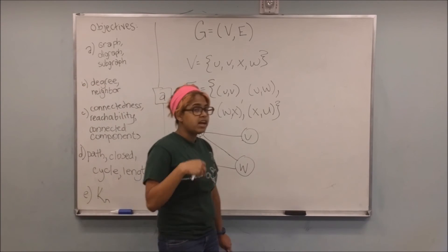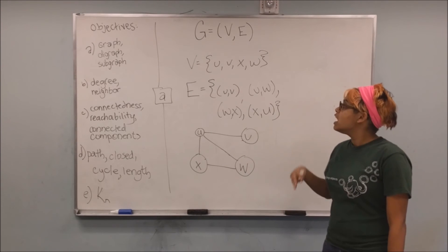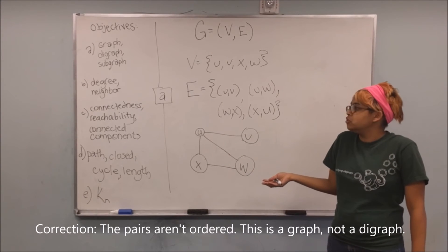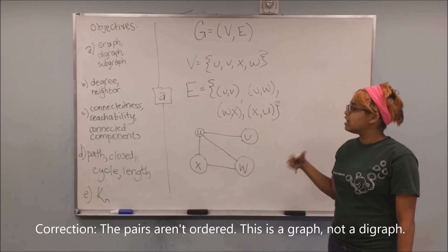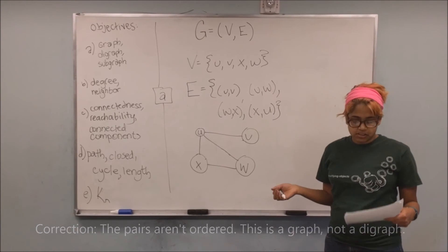Alright, and so this visually represents the graph. So mathematically, it's just defined as the set of vertices, V, and then some set of ordered pairs within those vertices, and that's E, the edges, and then visually you can draw it like this.